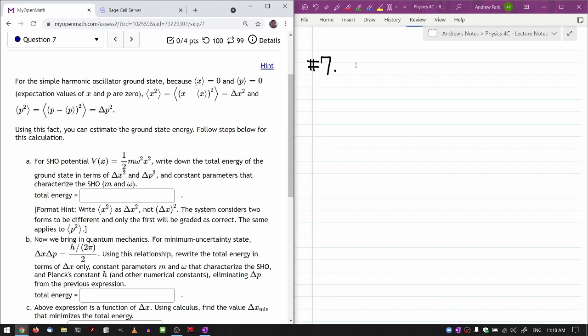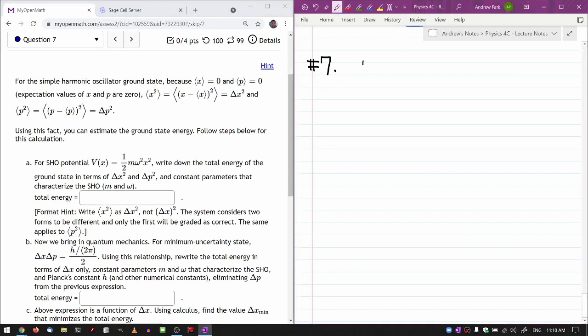So let's say we have the ground state wave function psi knot of x. Then the total energy, well, total energy is kinetic energy plus potential energy. So in terms of operators, this is going to be momentum squared over 2m plus potential energy for simple harmonic oscillator is one half m omega squared x squared, x as operator.